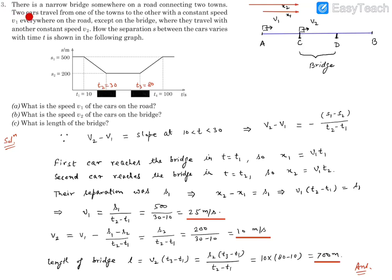Question number three reads: there is a narrow bridge somewhere on a road connected to two towns. Two cars travel from one town to the other with a constant speed V1 everywhere on the road except on the bridge, where they travel with another constant speed V2. How the separation between the cars varies with time t is shown in a figure. We need to find V1, V2, and the length of the bridge.